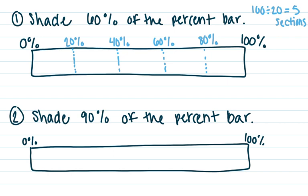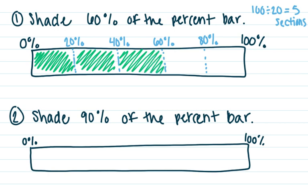And what they would like for us to do is shade in sixty percent. So here we go. I'm going to shade in twenty percent, forty percent, and sixty percent. So there's a visual representation of sixty percent.